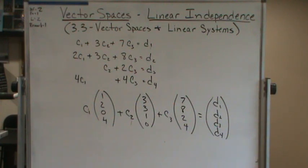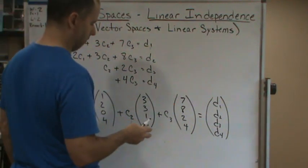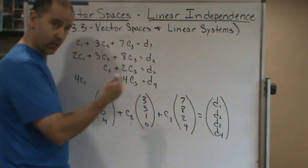So again, this has a solution, right? The system has a solution if and only if the vector of d's is a linear combination of the other column vectors, as shown, meaning that the vector of d's is in the column space of the matrix, or excuse me, the matrix of coefficients. And that's where we're going.